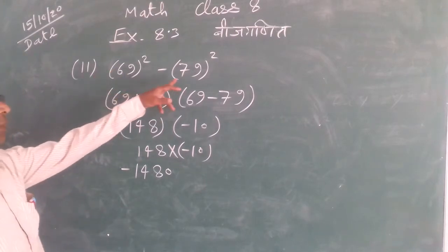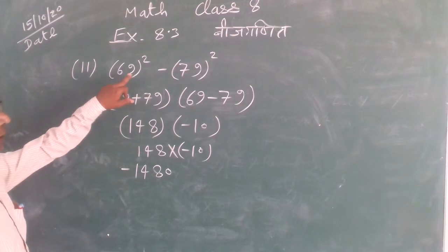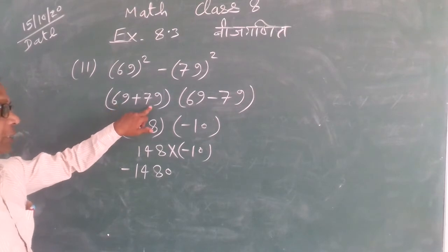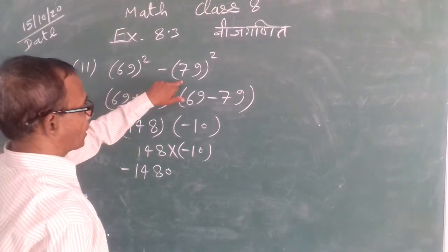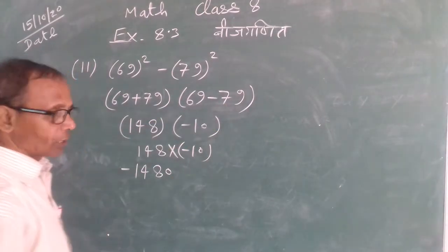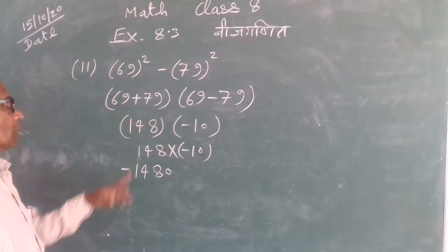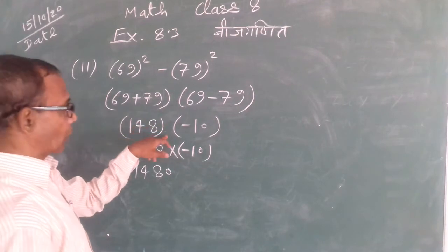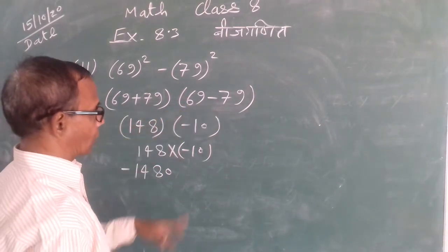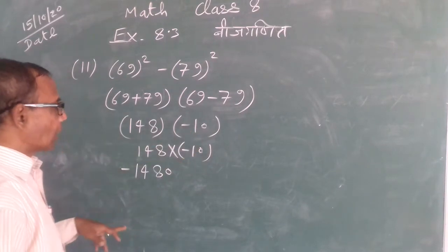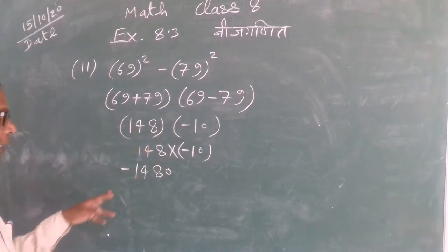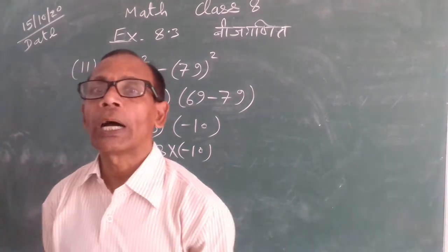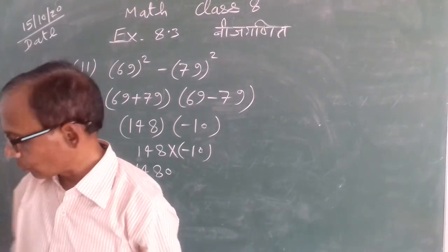99² - 89², a² - b², so a + b which is 99 + 89, and a - b which is 99 minus 89. 148 times minus 10 equals minus 1480.